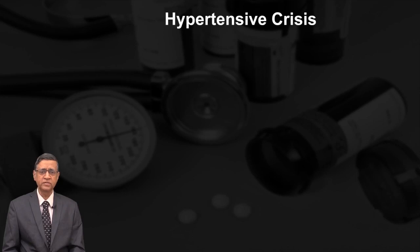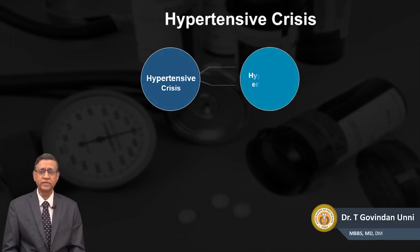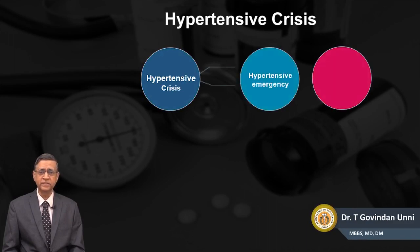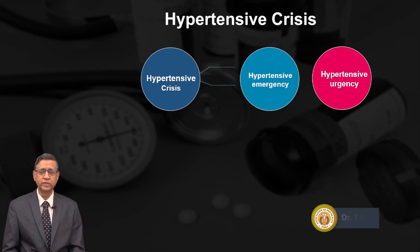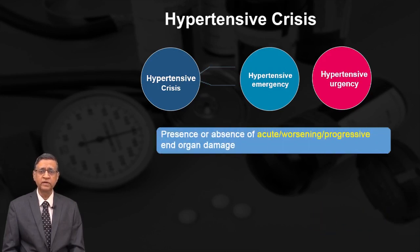Hypertensive crisis can be divided into hypertensive emergency and hypertensive urgency. The difference between the two is the presence or absence of acute worsening progressive end organ damage.